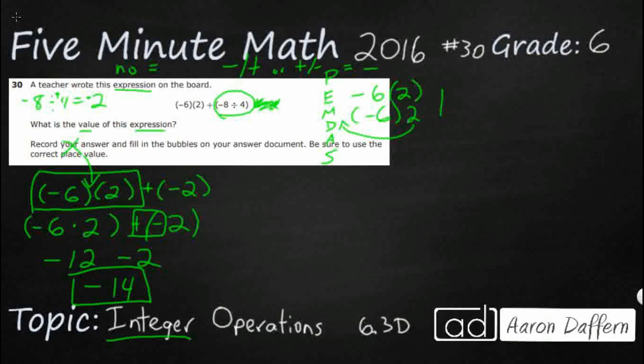So what we need to do is we need to take a look at what the answer document would have. So your answer document is going to be kind of confusing. It's going to have a negative, it's going to have a spot for two different decimals, it's going to have a spot for four different whole numbers, and then it's going to have a plus, minus over here on the side.